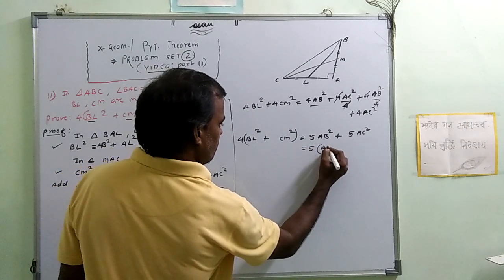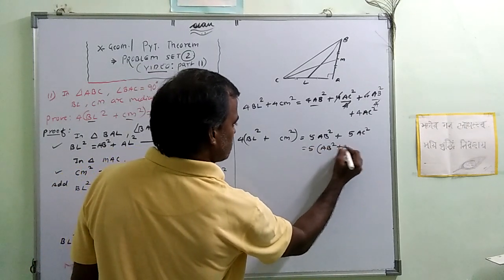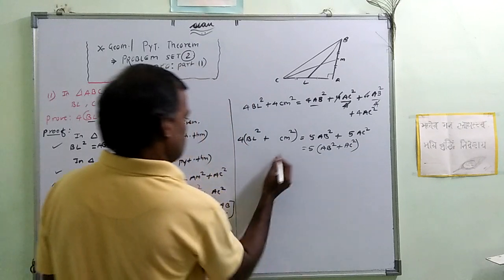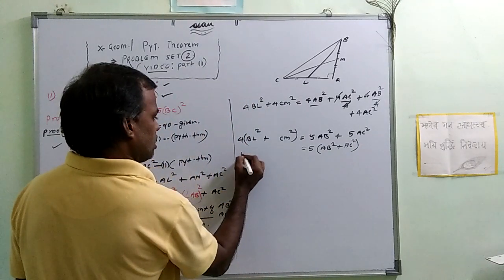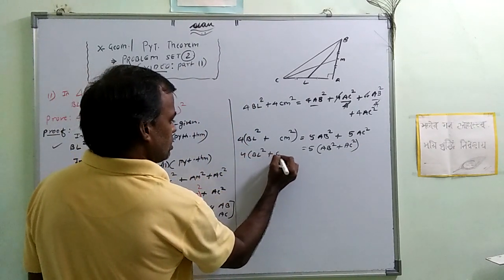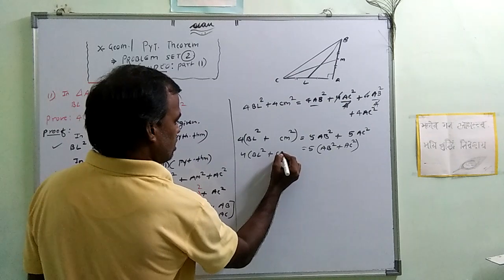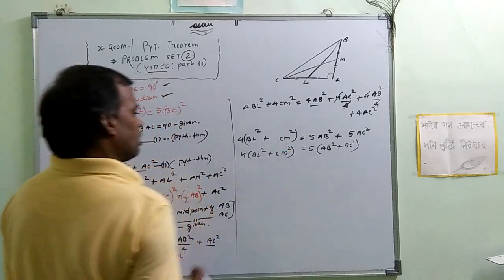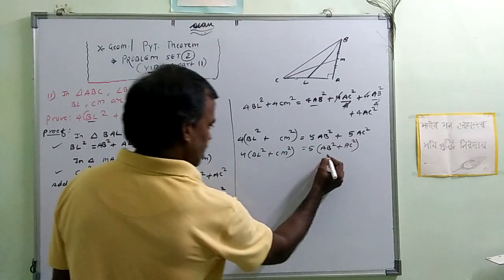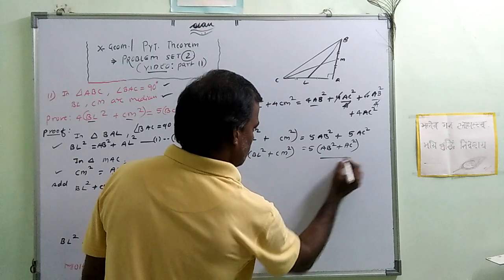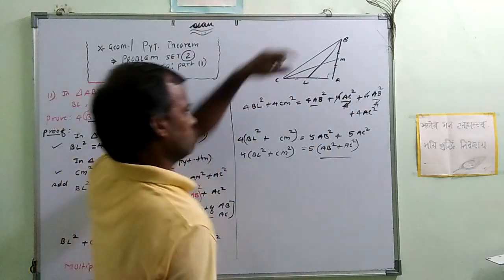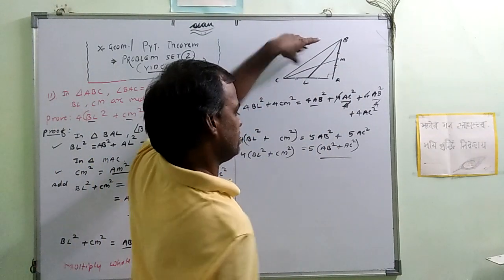We have 5AB² plus 5AC², and since AB² plus AC² equals BC² by Pythagoras, we get: 4BL² plus 4CM² equals 5BC². Hence proved.